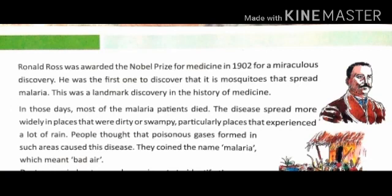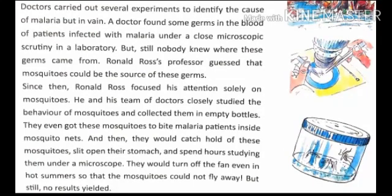Previously, when the cause of malaria was not known, it was thought that malaria is caused due to poisonous gases — that is why it is named malaria, because malaria means bad air. It was observed that this disease spread more in areas which receive a lot of rainfall, so people thought poisonous gas was being released in these areas and this is how malaria was affecting people. The doctors carried out various experiments but no results were found.